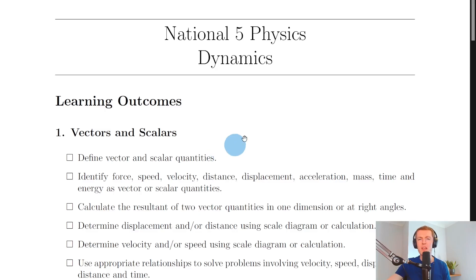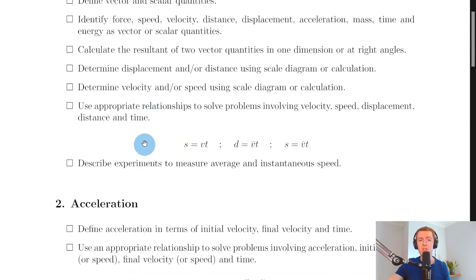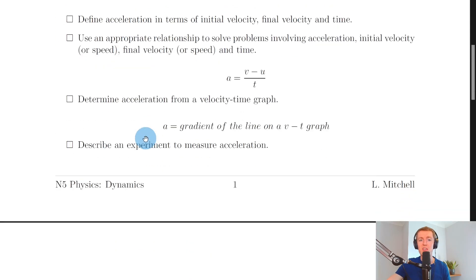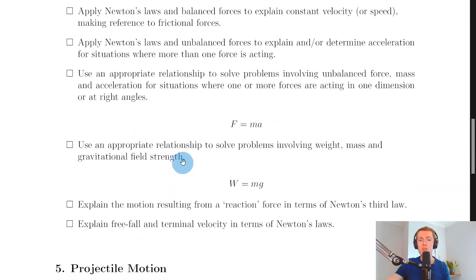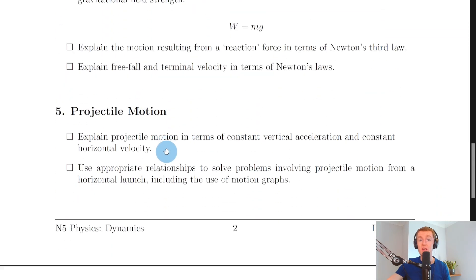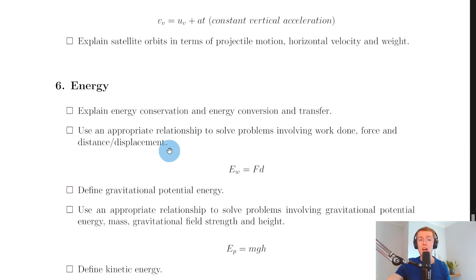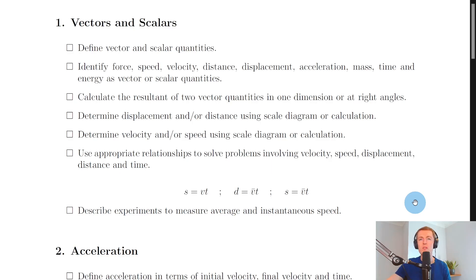Now being one of the biggest topics in the National 5 course, the SQA split the dynamics topic into six key areas: vectors and scalars, acceleration, velocity time graphs, Newton's laws, projectile motion and lastly energy. We'll go through each of these sections in turn so you can see what you need to know and be able to do for the exam.